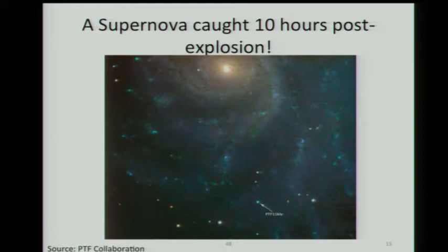In August 2011, we discovered PTF11kly in Messier 101, the Pinwheel Galaxy, only 8 megaparsecs away, found less than 10 hours after it exploded. And we knew it was a type 1A. This was characterized 10 hours after it exploded. That requires an incredible machinery to actually work. Because we caught it so early and nearby, you could look at Hubble, you could look at Chandra.